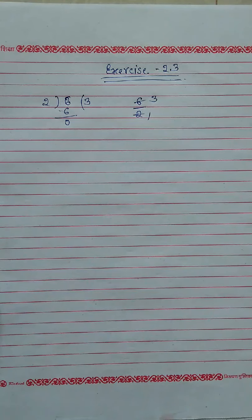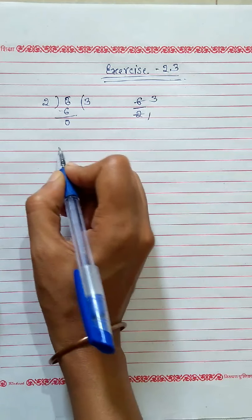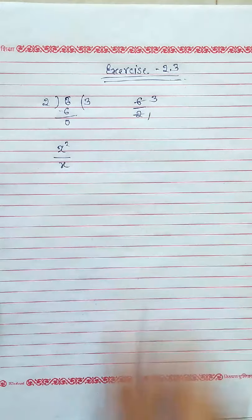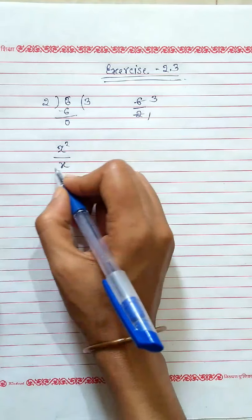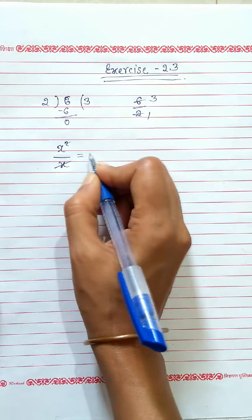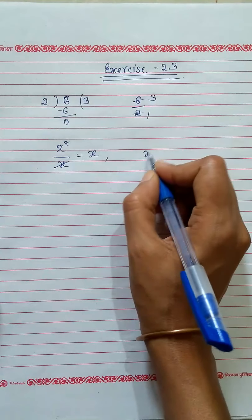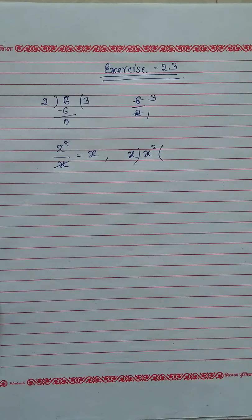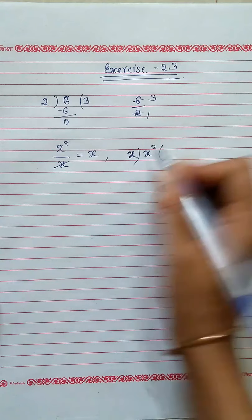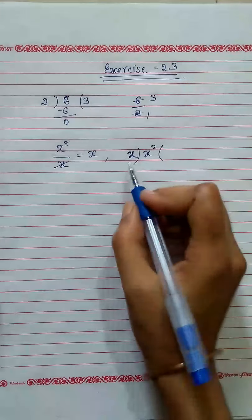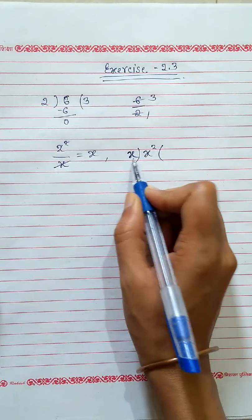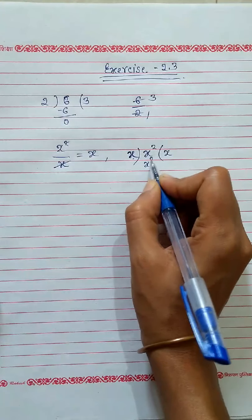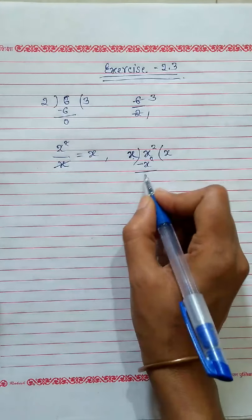You also know the division of variable to variable. For example, x squared upon x. Here the x cancels with one x, so our answer is x. And the second way: x squared divided by x — which number do we multiply by x to get x squared? Simple: x, then x squared.